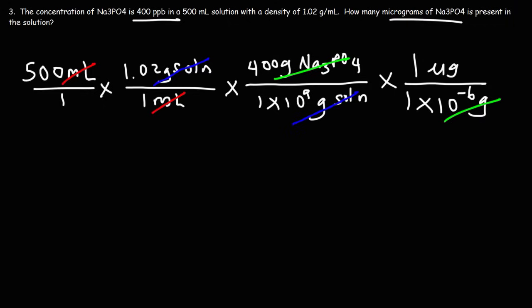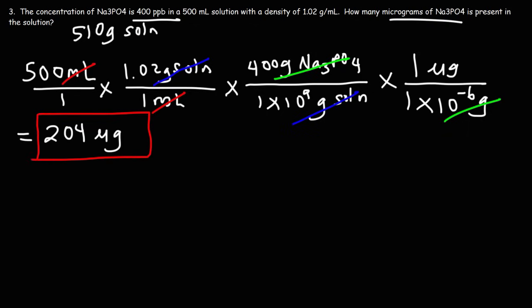Now let's do the math. Multiplying 500 by 1.02 gives us 510 grams of solution. Taking 510, multiplying by 400, and dividing by 1 times 10 to the 9 gives 2.04 times 10 to the negative 4. Dividing that by 1 times 10 to the minus 6 gives our final answer: 204 micrograms. That is the mass of sodium phosphate present in this solution.